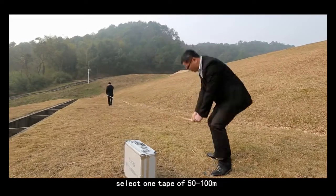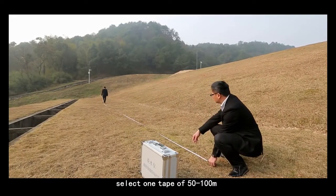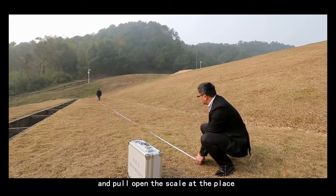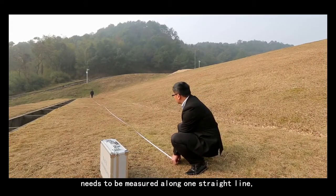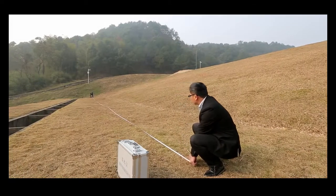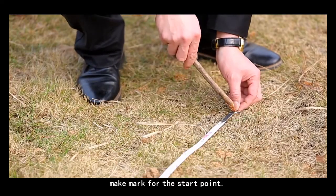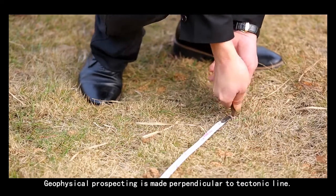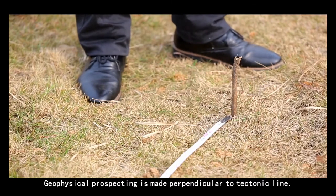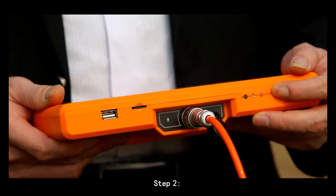Measurement step 1: Wiring. Select one tape of 50 to 100 meters and pull open the scale at the place needs to be measured along one straight line. Make mark for the start point. Geophysical prospecting is made perpendicular to tectonic line.